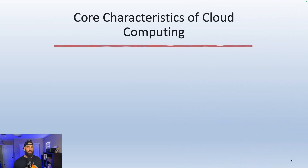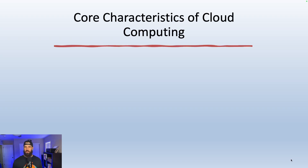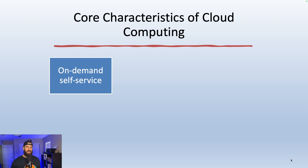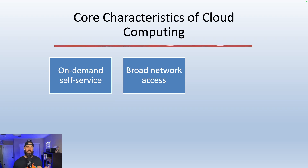Let's talk about some of cloud computing's core characteristics — the five traits that make cloud computing, well, cloud computing. They're the reason why you can access apps instantly, scale them to millions of users, and only pay for what you use. On-demand self-service means you can spin up servers, databases, and storage instantly. Broad network access means that services are available from anywhere on any device with an internet connection — it's what powers remote work, mobile applications, and global collaboration.